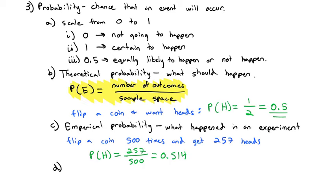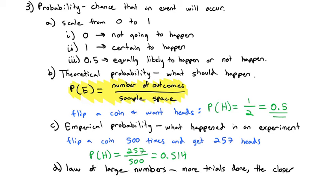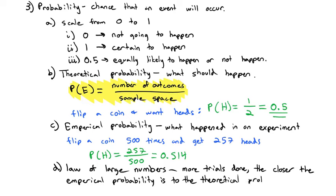That difference can be made smaller using what's called the law of large numbers, which basically says that the more trials you do, the closer the empirical probability gets to the theoretical probability. If I did 1,000 trials, it would be closer to 50%. A million trials flipping a coin would get even closer to 50%. More trials means they're going to be closer together.